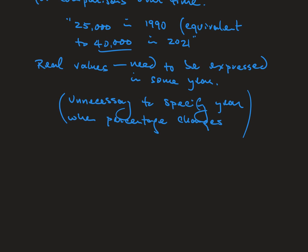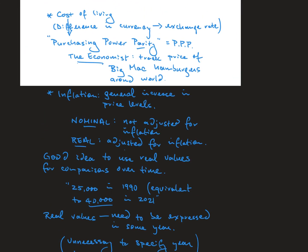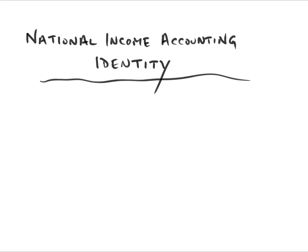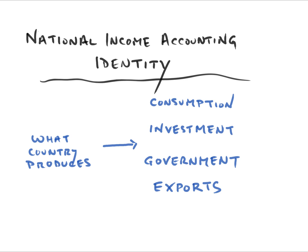Now I'm going to come to something called the National Income Accounting Identity. Here is the basic idea: everything that a country produces goes to one of four purposes. Consumption — the things we enjoy. Investment — stuff that makes the economy more productive in the future. Government use. Or it gets exported. This is called an identity because it must be true. It's also a useful way of thinking about what happens in the economy.